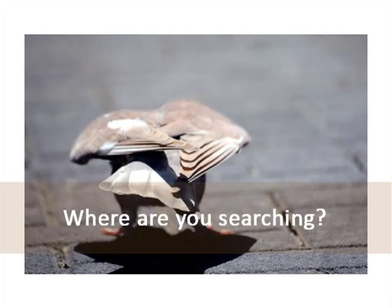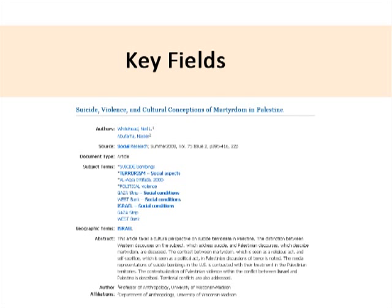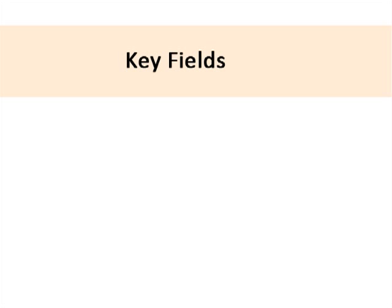It's also a good idea to consider where you are searching. This is especially important in databases that search the full text of all documents, like JSTOR. Most databases default to searching the key fields, which includes the full citation, subject headings, and abstract if there is one. This is typically a fairly efficient and effective way to search. You may also search for words only appearing in the title, which is useful when there are many articles on your subject and you want to narrow them down.